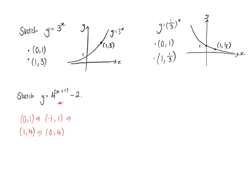Then our minus 2 means moving down in the y direction, so we subtract 2 from our y values — giving (minus 1, minus 1) and (0, 2). The easiest thing is to draw the shape of the graph first, then draw your axes in. It's an exponential growth graph. We mark the point (minus 1, minus 1) and the point (0, 2), drawing in the y-axis so that point is at 2, then placing the x-axis accordingly.